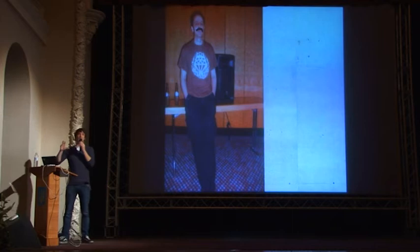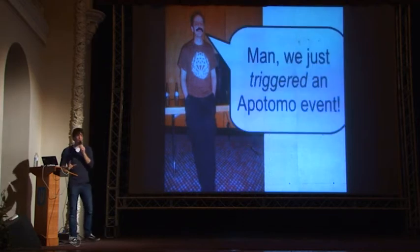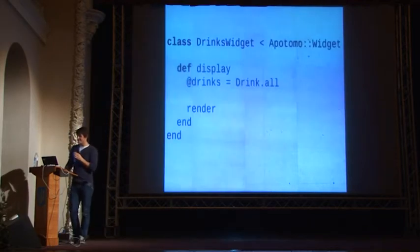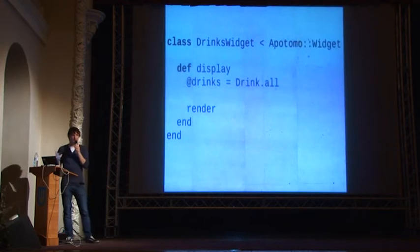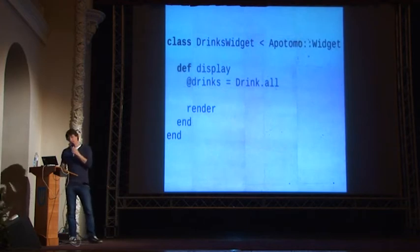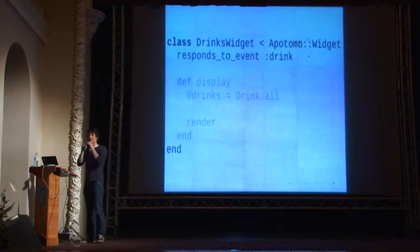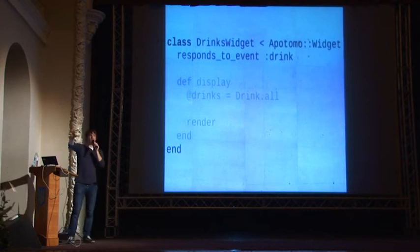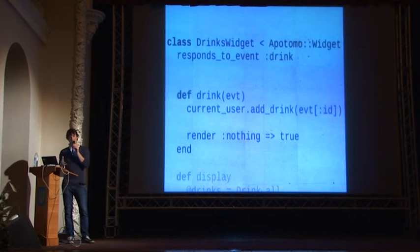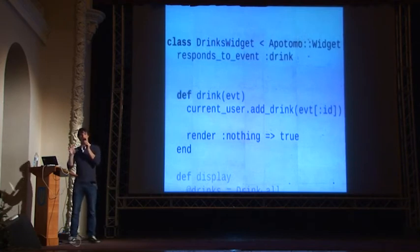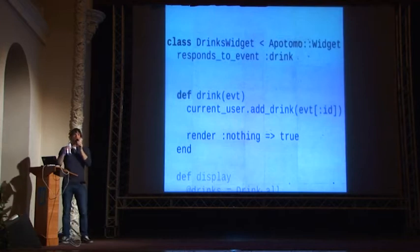When I click the button, JavaScript will issue an Ajax request to a new route, and this route will trigger an Apodomo event. There is a drink event triggered in Ruby now, so we should handle it. We intercept that in our widget by using the respond_to_event method. I tell my drinks widget: if you see a drink event, call your drink method and process this event. This is all I need to do to get the click event from the front-end into Ruby.